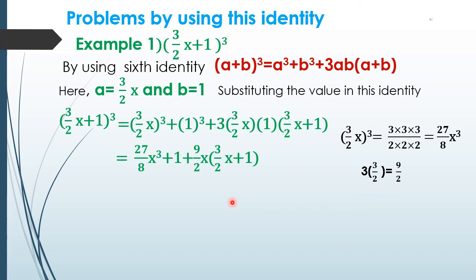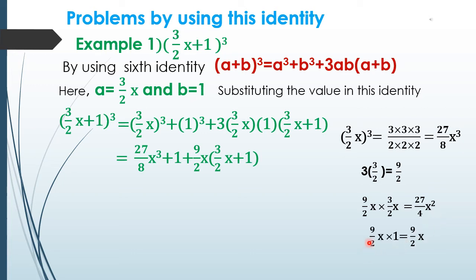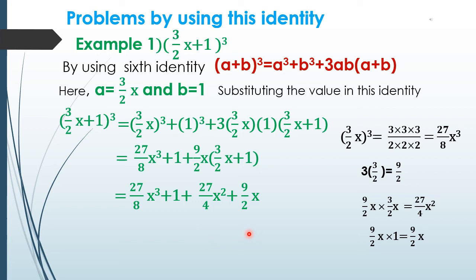Multiplying out 9/2 x × (3/2 x + 1): 9/2 x × 3/2 x = 27/4 x², and 9/2 x × 1 = 9/2 x. So the final answer is 27/8 x³ + 27/4 x² + 9/2 x + 1.